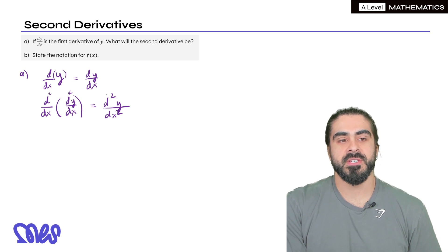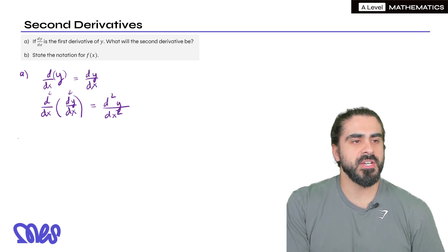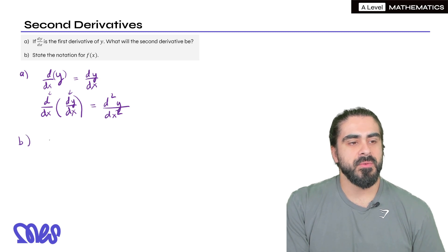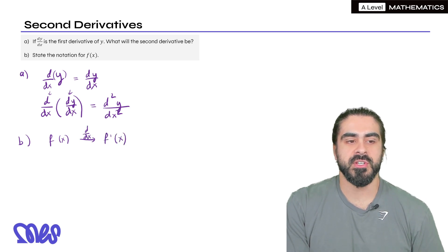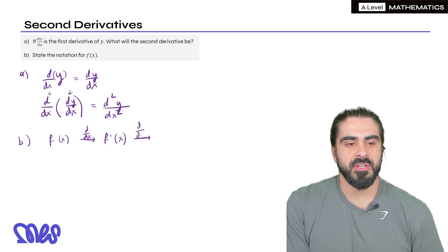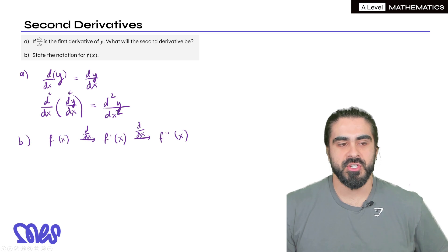What we're doing is differentiating the gradient. Now for f(x) notation: if we have f(x) and differentiate with respect to x, we get f'(x) — also written f dash x. Then when we differentiate that again, we would have two dashes: f''(x). So we can use those notations interchangeably.